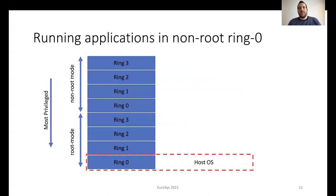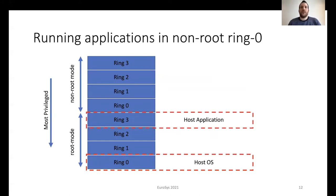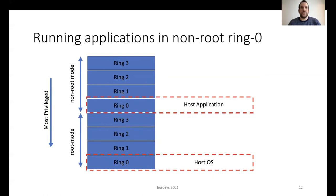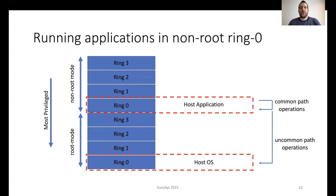Today, the operating system runs in root ring 0 and user applications run in root ring 3. The main idea is that Aquila runs user applications in non-root ring 0. This enables handling all common path operations without the need for a protection domain switch, serving page faults in a trap-based manner. Aquila also requires the host operating system to serve uncommon path operations, which require a VM exit and are heavier than before. This is not an issue as uncommon path operations happen less frequently.